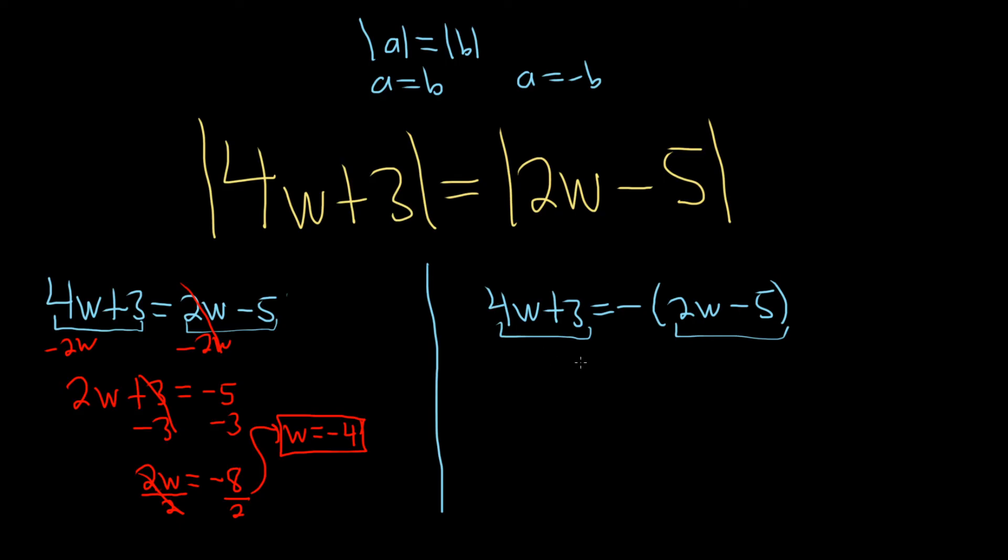Over here on the right, it's very similar. But we first have to distribute this negative 1. So it's 4w plus 3. And that's equal to, let's see, negative 1 times 2w is negative 2w. And then negative 1 times negative 5 is positive 5.